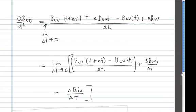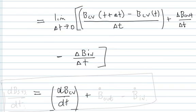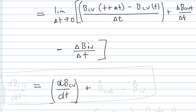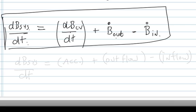Now, looking at those terms: the first term is simply the time rate of change of b in the control volume. Delta b out over delta t in the limit as delta t goes to zero is the rate at which b is passing out across the control surface, and the last term is the rate at which b is entering the control surface. So the basic result is: the time derivative from a system point of view equals the accumulation of b in the control volume, plus outflow minus inflow. Remember that pattern — accumulation plus outflow minus inflow.